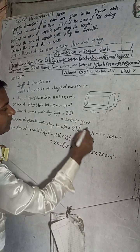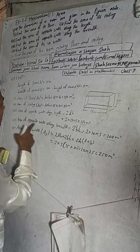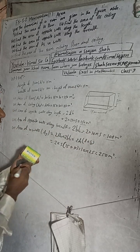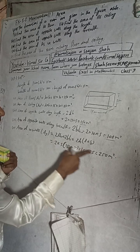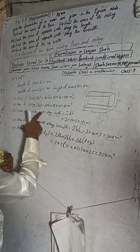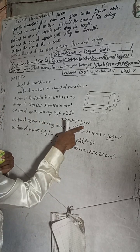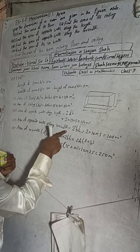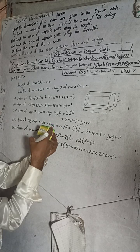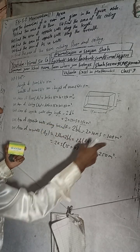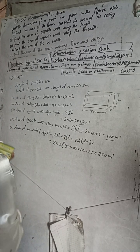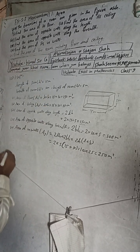If we add the two wall areas: 150 + 100 = 250 meter square — same answer. So both methods give the correct result of 250 meter square.